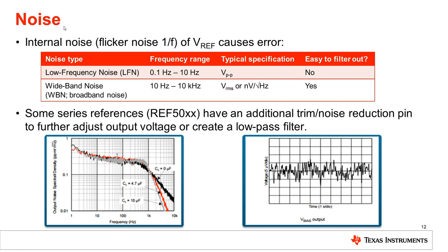Next, we will cover noise. Reference noise is a random variation in the output voltage of the reference. This noise is inherent to the design of the device and can only be minimized through filtering. There are two main categories of noise specification in a voltage reference datasheet. Low-frequency noise, also referred to as flicker noise, is focused in the frequency range below 10 Hz, and is typically represented as a peak-to-peak voltage. The low-frequency aspect is important because the noise is not easy to filter out.